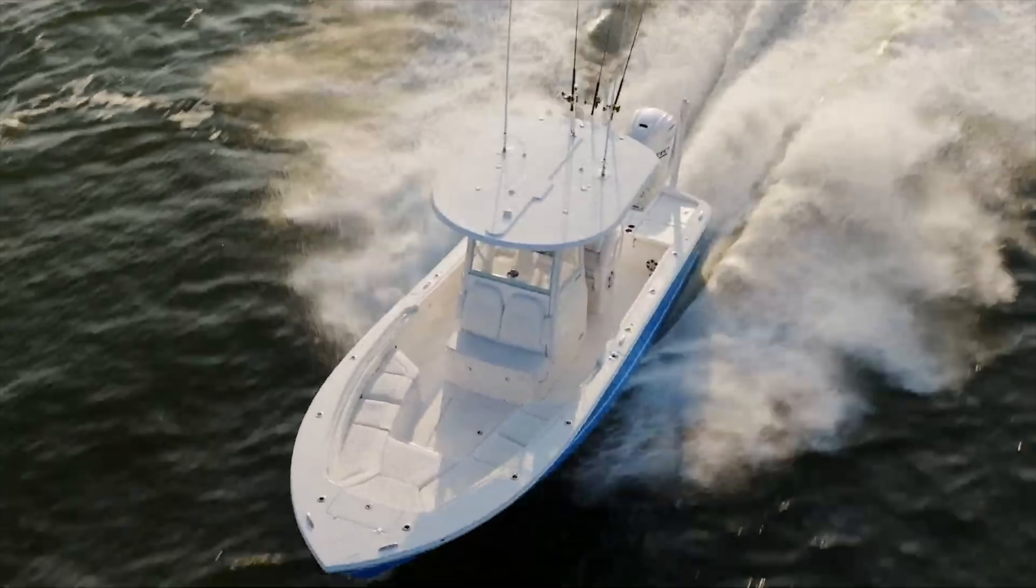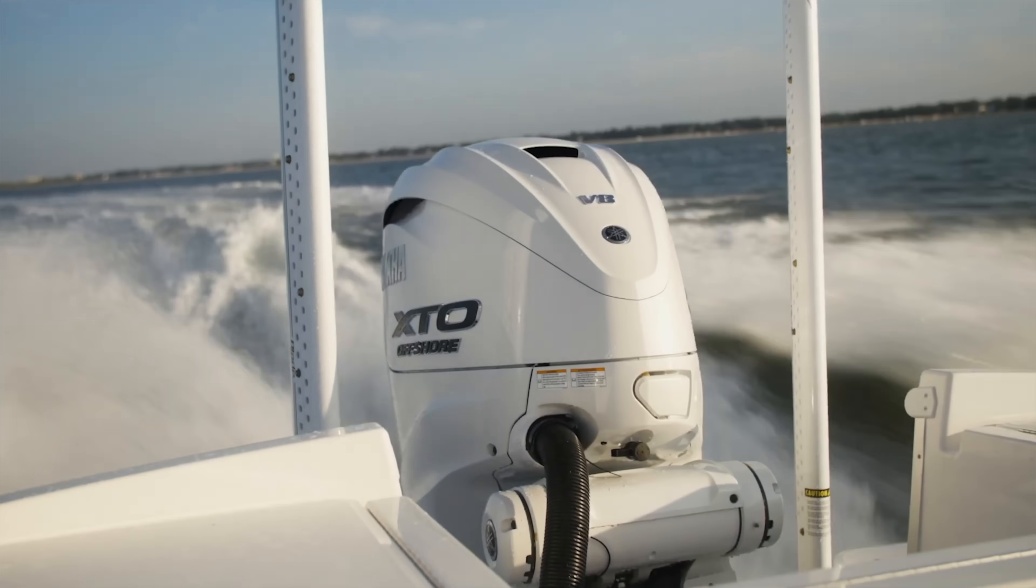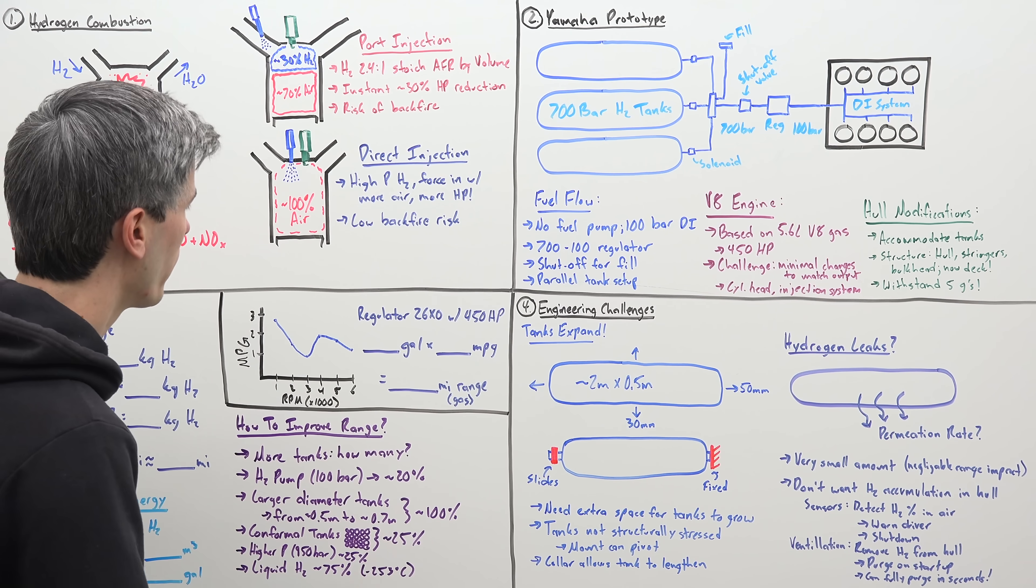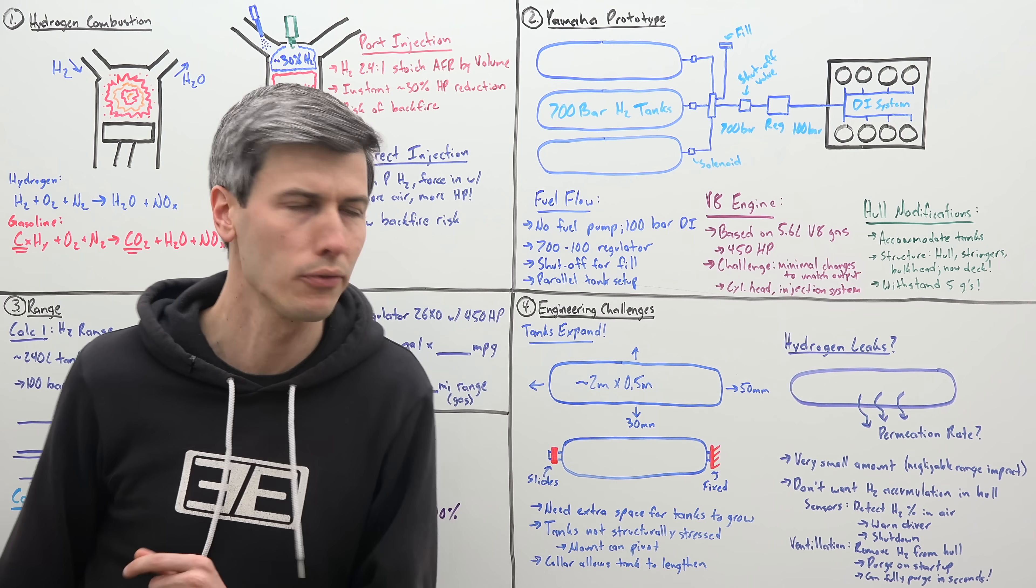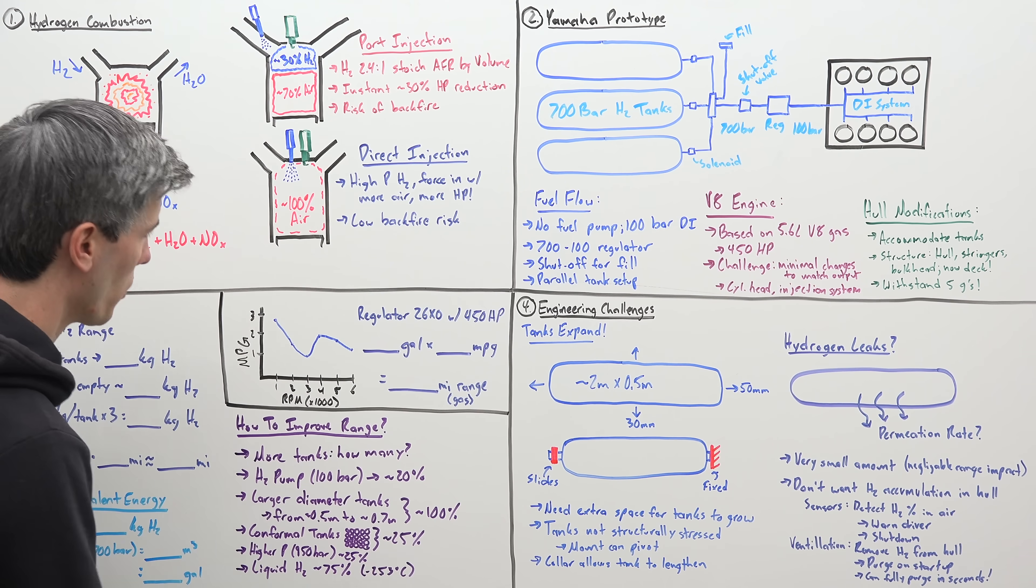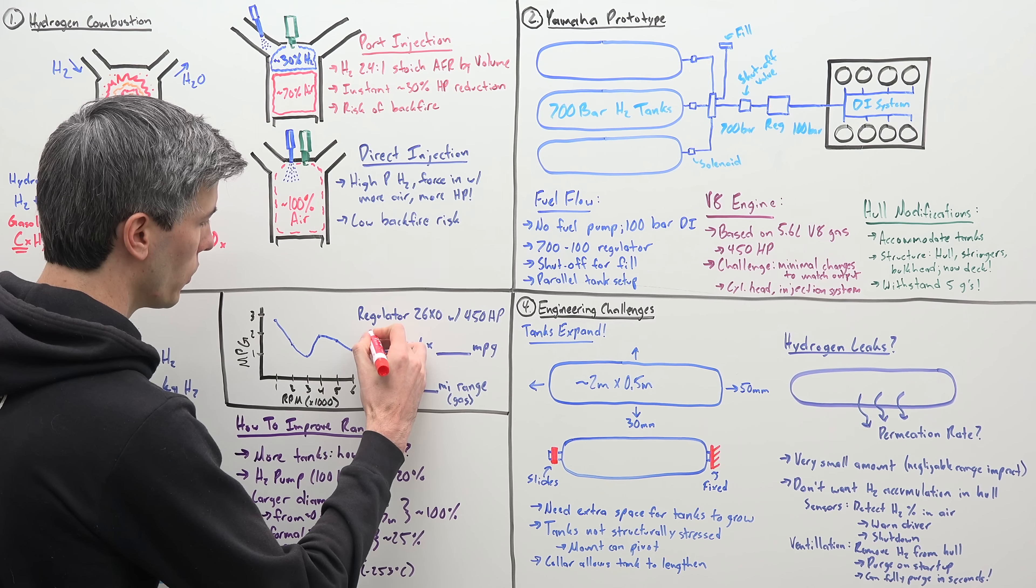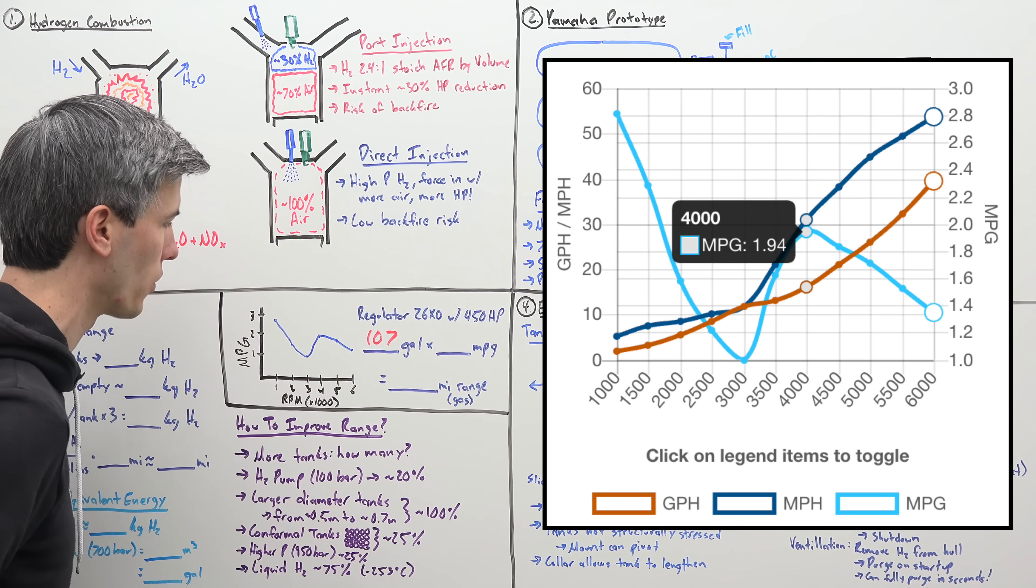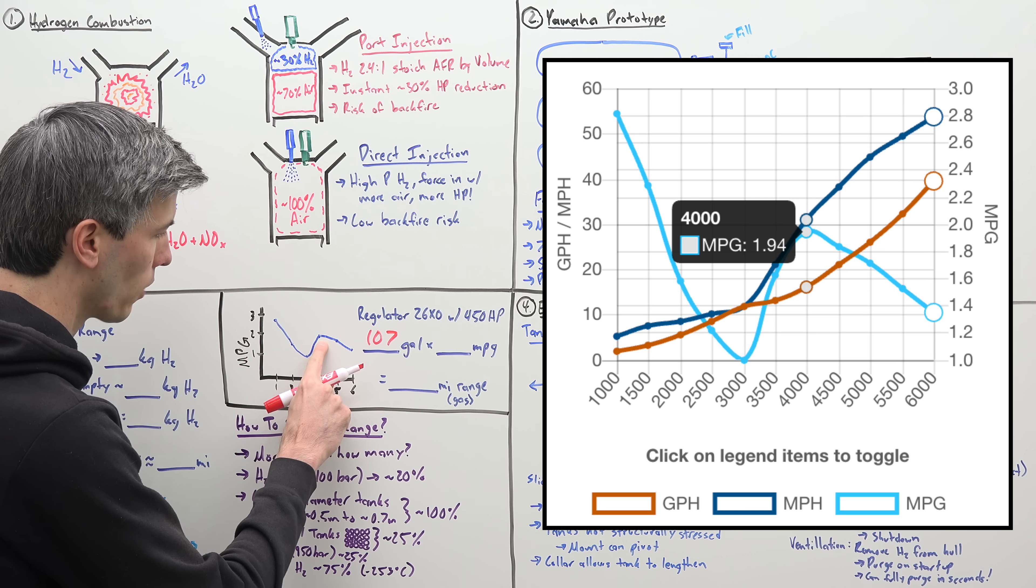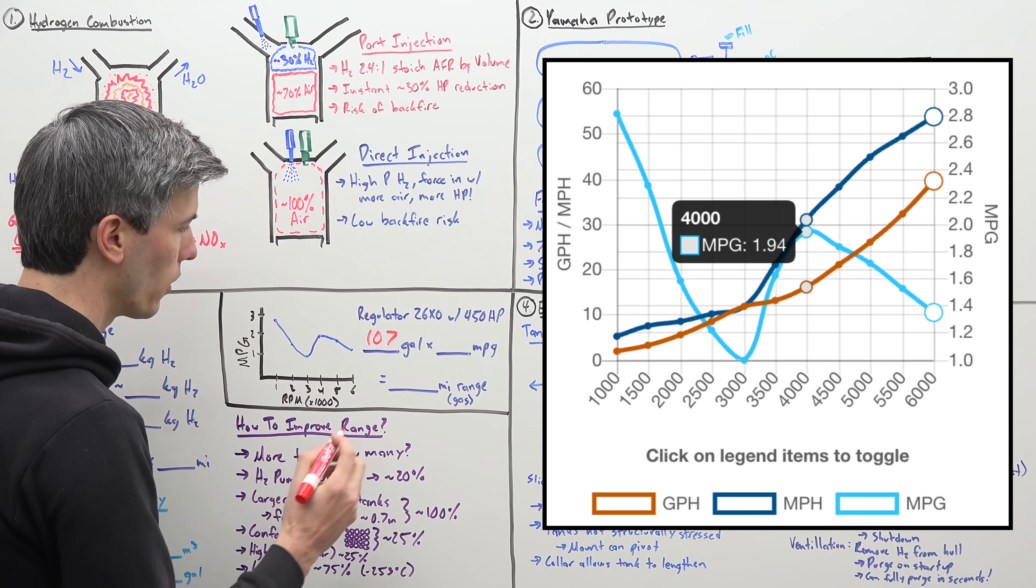Alright, so first, let's look at the production gasoline version of this boat. Alright, so the gas version of this boat is the Regulator 26XO with a Yamaha 450 horsepower motor. So, this boat has a gasoline fuel tank of 107 gallons and you can look at the fuel economy versus RPM curve and find this peak right here exists at about 4,000 RPM.